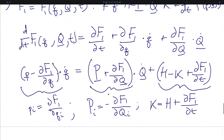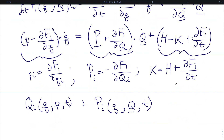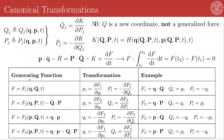We can now take these expressions and find the inversions of them that give us expressions for the transformed generalized coordinates as functions of the original generalized coordinates and their conjugate momenta and time, and the new conjugate momenta as functions of the original and transformed generalized coordinates and time, giving us the full transformation of our equations of motion. There are four basic generating function types. F1 is a function of the original and transformed generalized coordinates, F2 is a function of the original generalized coordinate and the transformed momenta, F3 is the original conjugate momenta and the transformed generalized coordinates, and F4 is a function of the original and transformed canonical momenta.